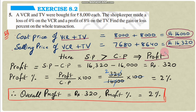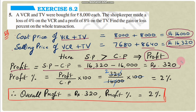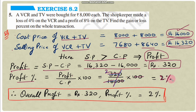Profit = selling price − cost price = 16,320 − 16,000 = 320 rupees. Profit percentage = (profit ÷ cost price) × 100 = (320 ÷ 16,000) × 100 = 2%. So the overall profit is 320 rupees and the profit percentage is 2%.